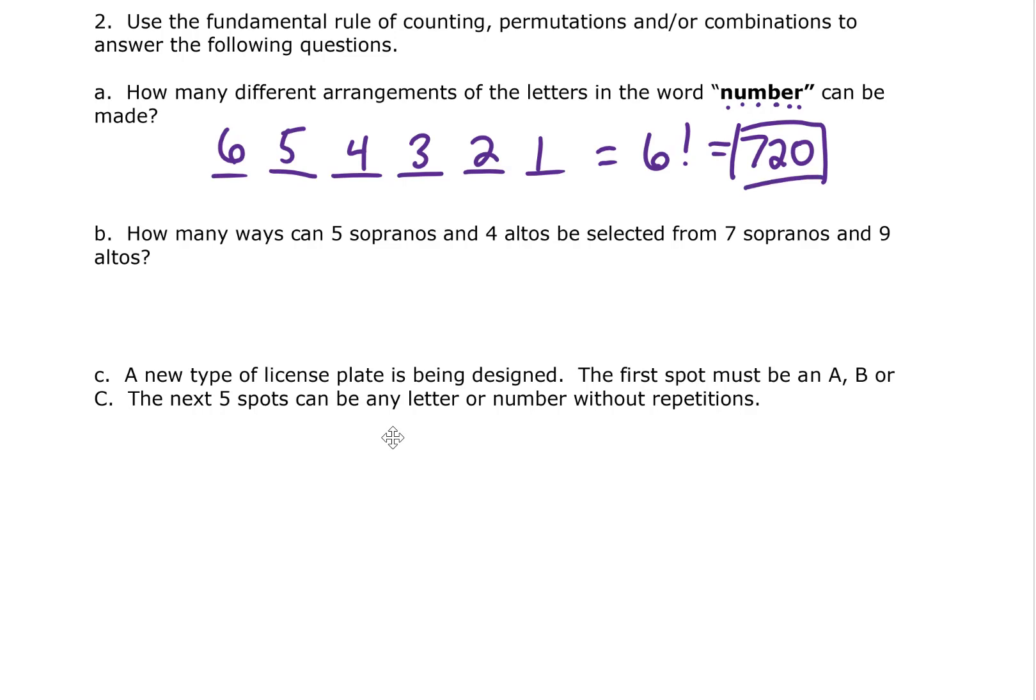Next question: how many ways can five sopranos and four altos be selected from seven sopranos and nine altos? So we have five sopranos we're selecting from seven sopranos. How many ways can we do that? Again we have to note that order doesn't matter here. That means we're going to use a combination. We have seven total that we're choosing from and we're choosing five of those.